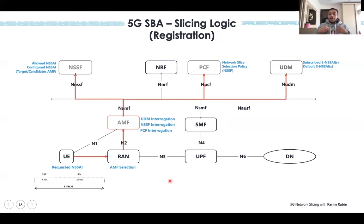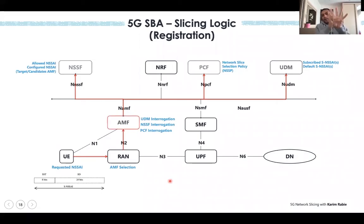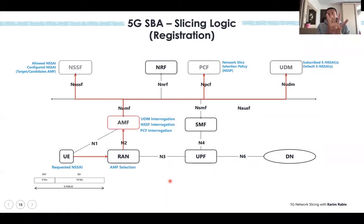As a UE, you can have multiple slices — up to eight, for example. The Network Slice Selection Policy from the PCF governs which application or traffic goes to which slice. For instance, video traffic might go to slice 2 and normal data traffic to slice 5. The PCF instructs the AMF which traffic should go to which slice.